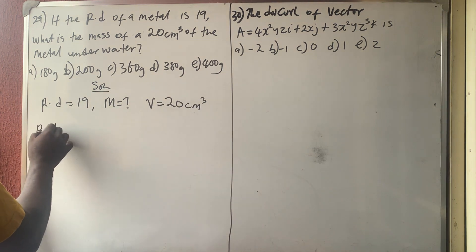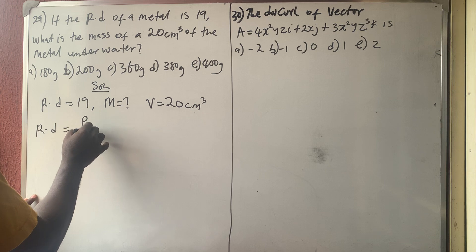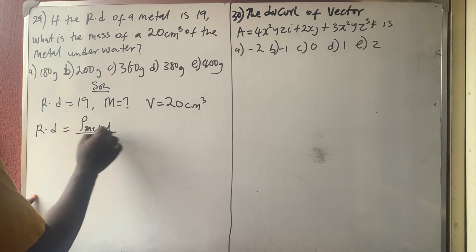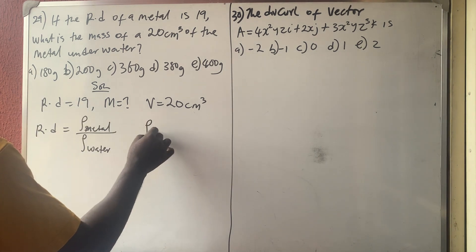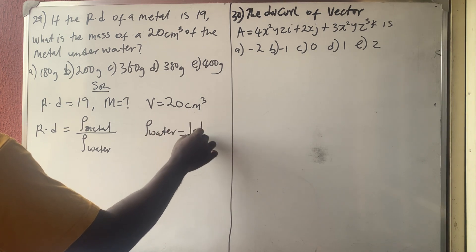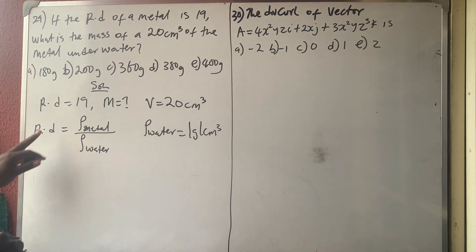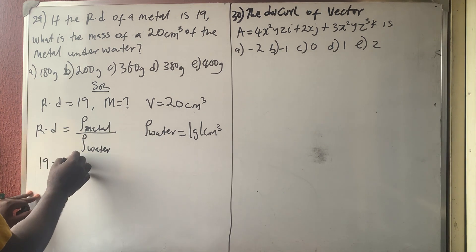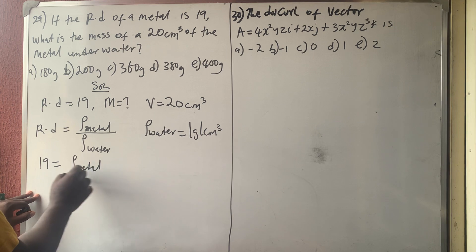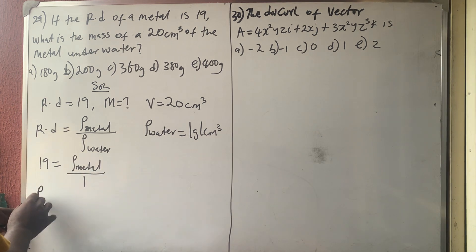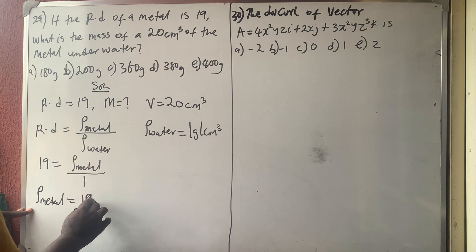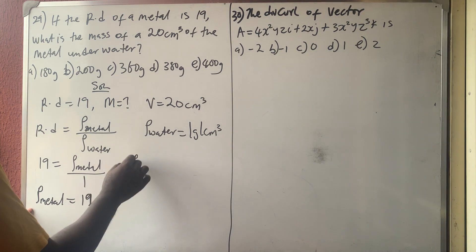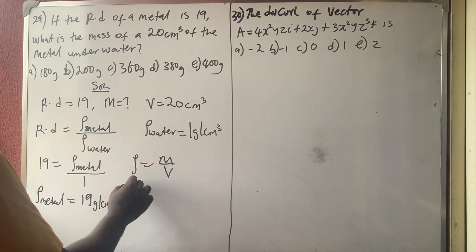Don't forget that relative density is the density of the substance or metal all over the density of water. The density of water is equal to 1 gram per cm cubed. So if you put it here, 19 equals density of metal over 1, so the density of metal is equal to 19 grams per cm cubed.